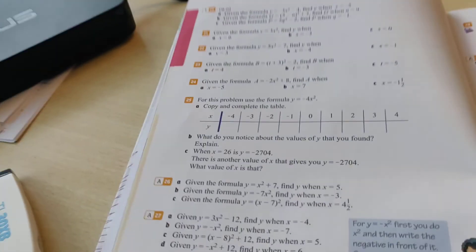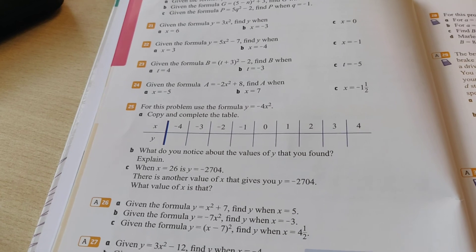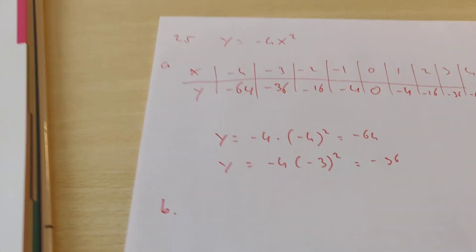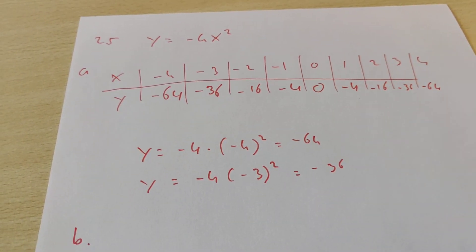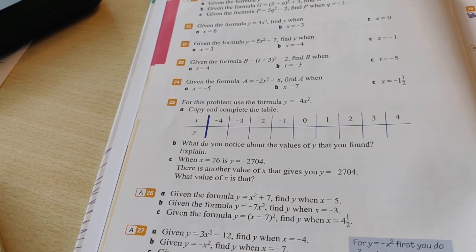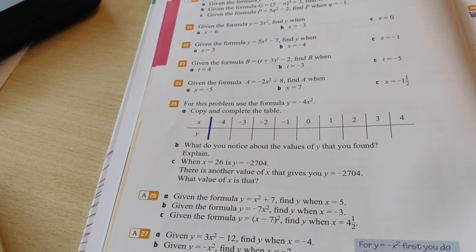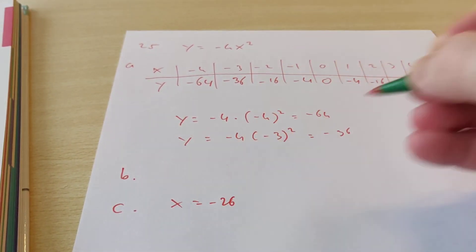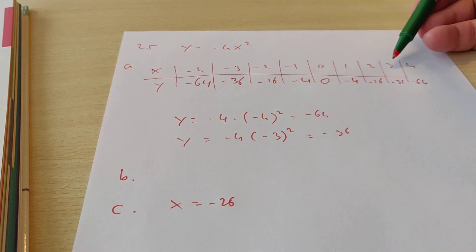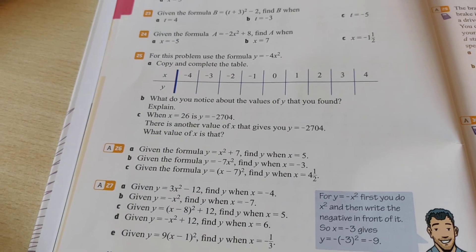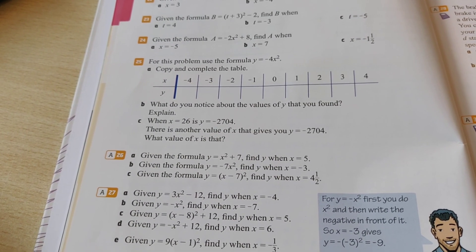Exercise 25 is not yet finished. For question B — what do you notice about the values of y? Well, what we notice is that at some point the numbers repeat themselves. For question C — when x is 26, y is minus 2704. There is another x value that gives the same answer. That answer for C would be x equals minus 26, because if you fill in a negative or a positive version of the same number, you get the same answer.